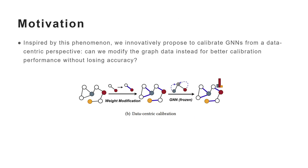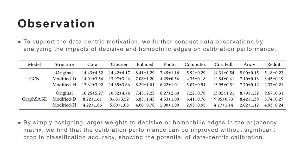Inspired by this phenomenon, we innovatively propose to calibrate GNNs from a data-centric perspective. Can we modify the graph data to achieve better calibration performance without losing accuracy? To support the data-centric motivation, we further conduct data observations by analyzing the impacts of decisive and homophilic edges on calibration performance. By simply assigning larger weights to decisive or homophilic edges in the adjacency matrix, we find that calibration performance can be improved without a significant drop in classification accuracy, showing the potential of data-centric calibration.